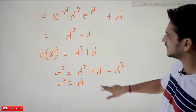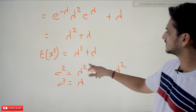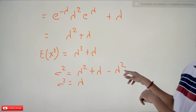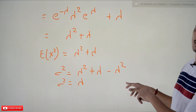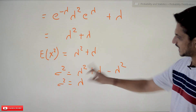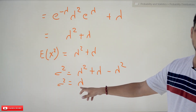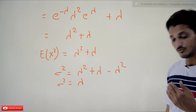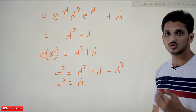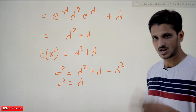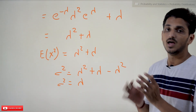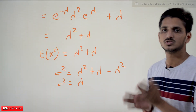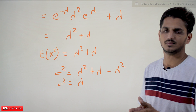Finally, variance = E[X²] − (E[X])² = (λ² + λ) − λ² = λ. So σ² = λ. The variance of the Poisson's distribution is λ, and the mean of the Poisson's distribution is also λ.